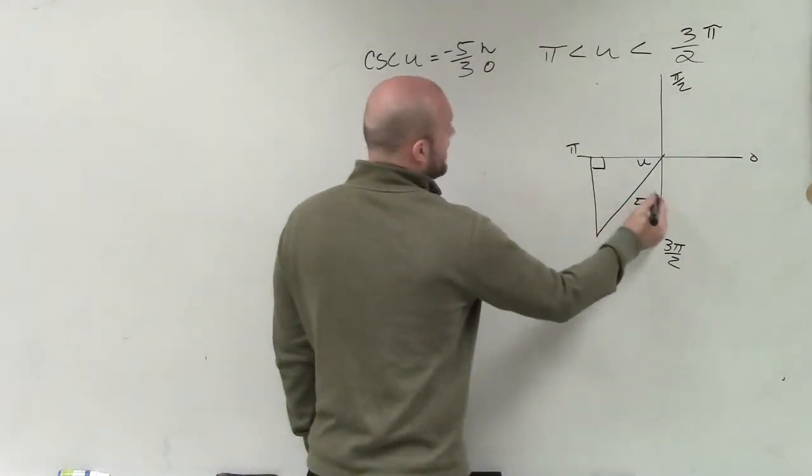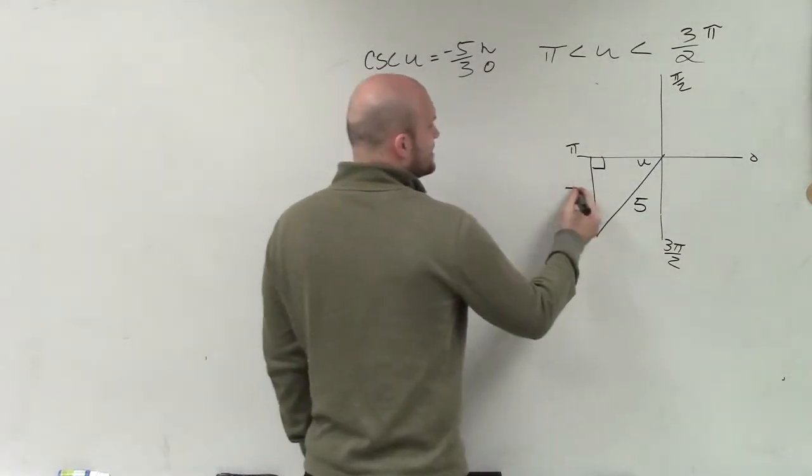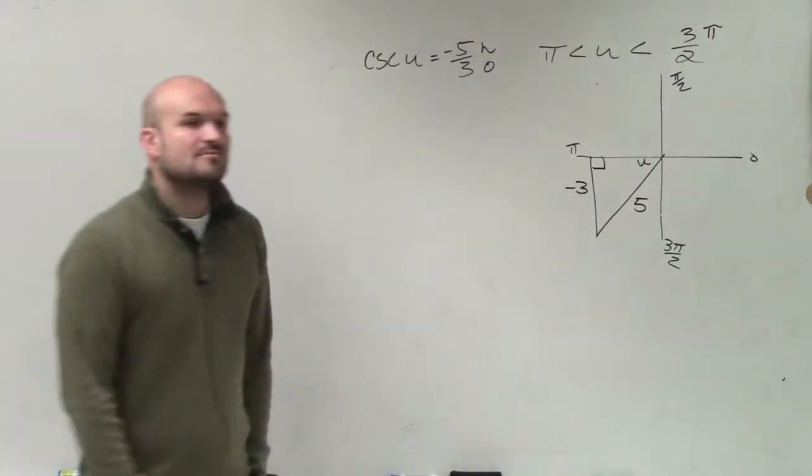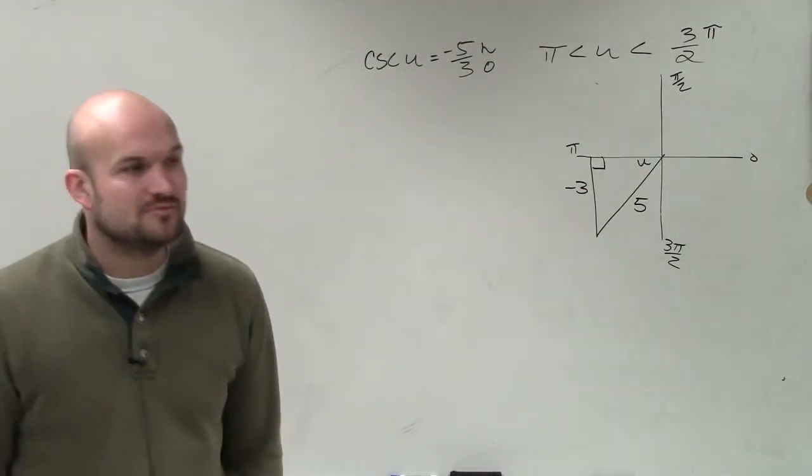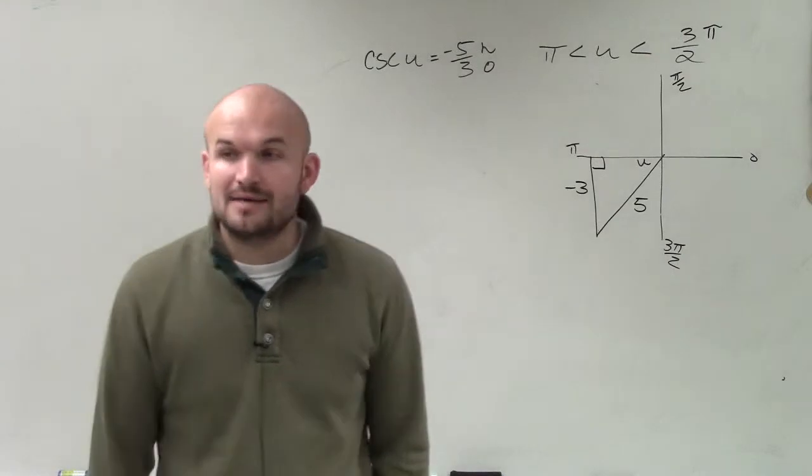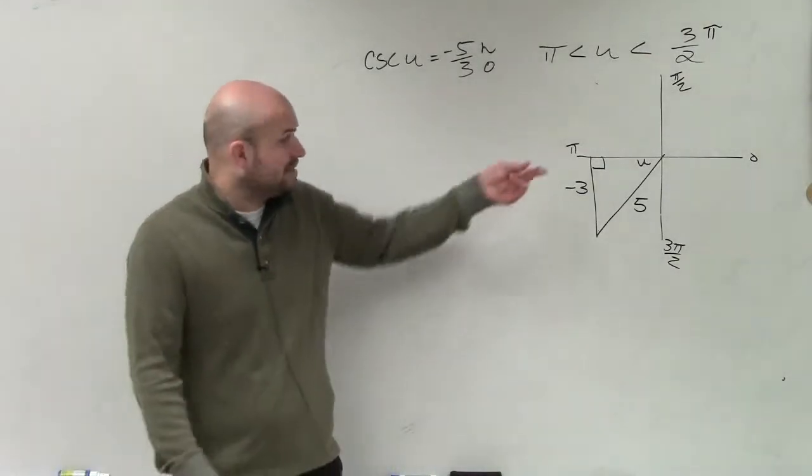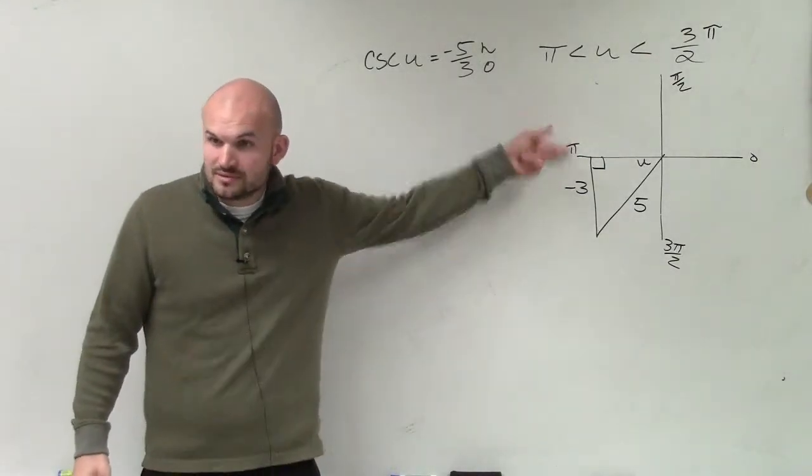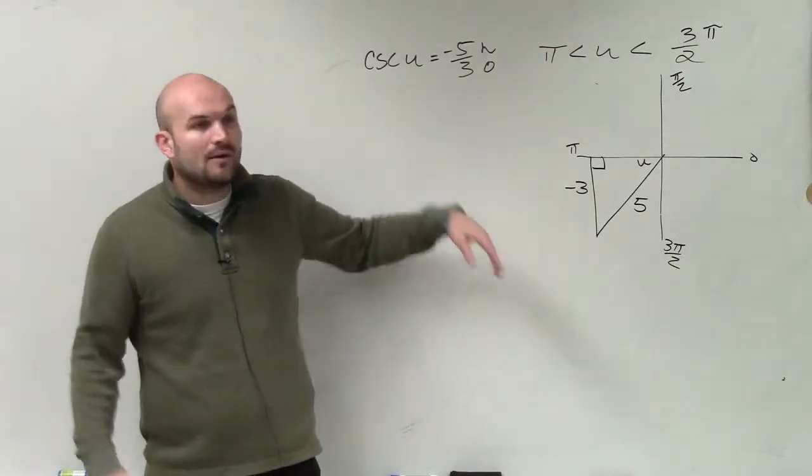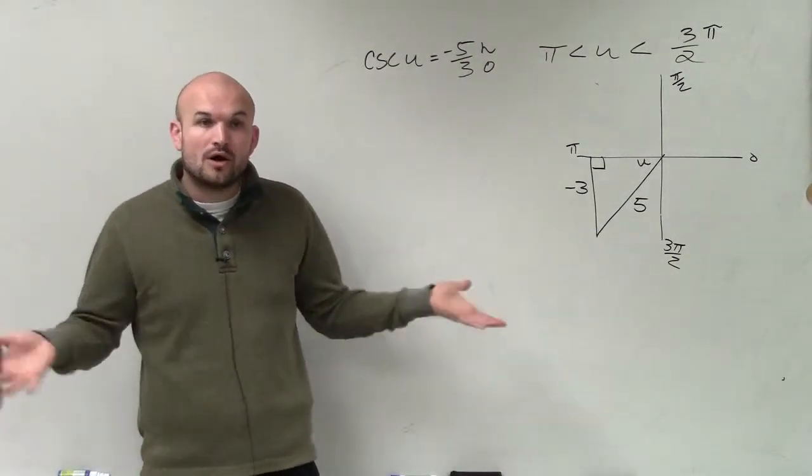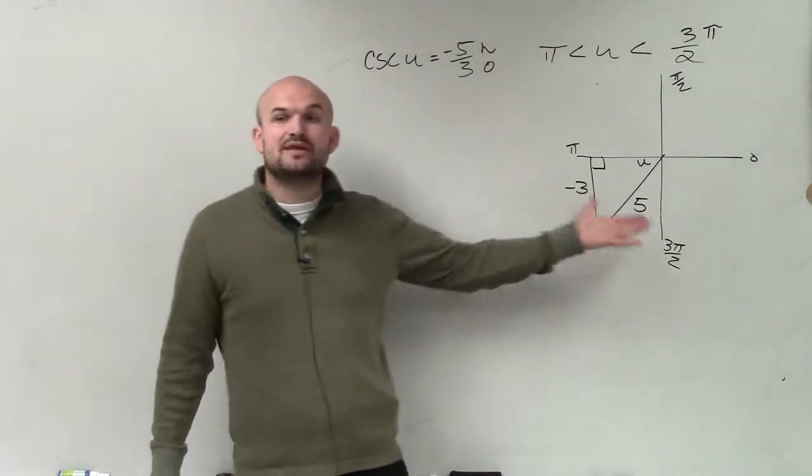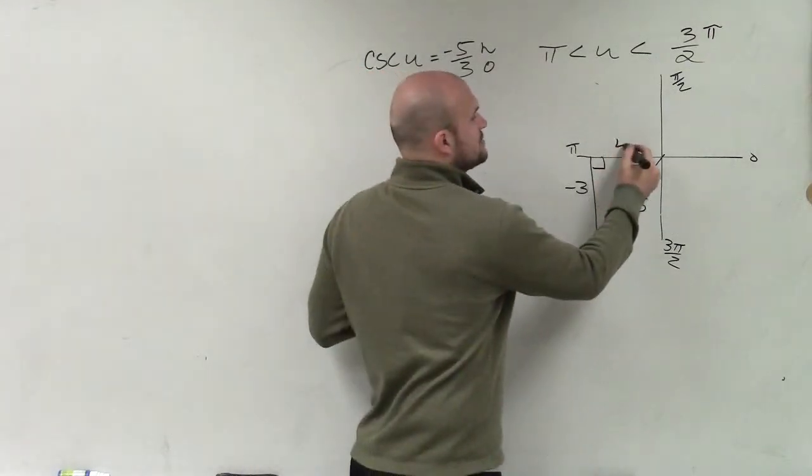So our hypotenuse is 5, and our opposite is negative 3. Please remember that your hypotenuse is never going to be negative. But it makes sense that the opposite is negative, right, because that has to go down. It's in the third quadrant.